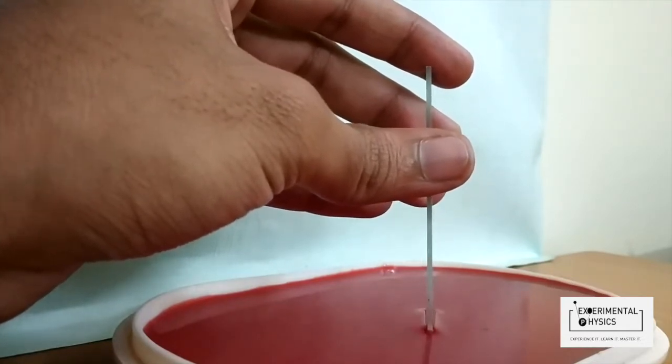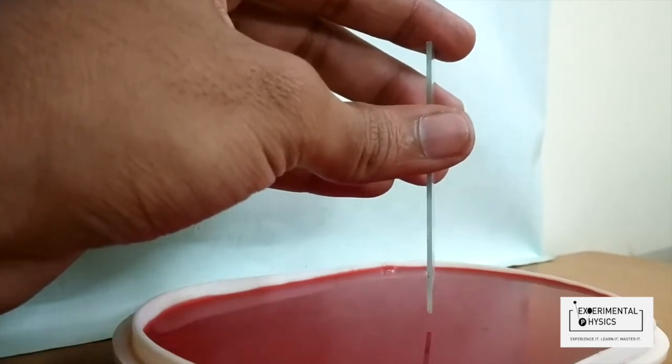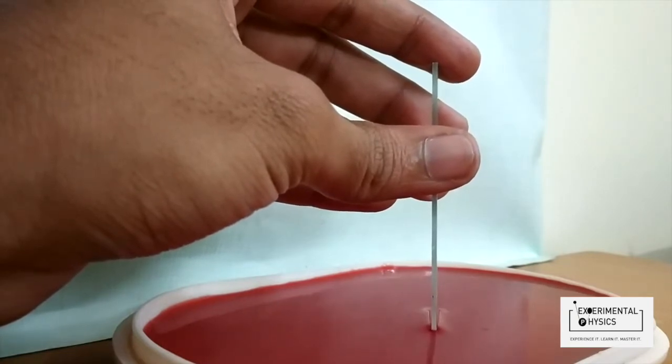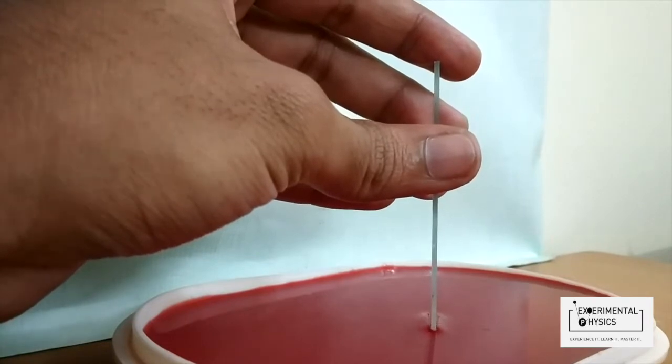When I take it out, you don't see anything, but when I dip it, you see that there is a curvature on both sides, right, on the surface of the water.